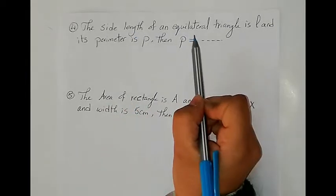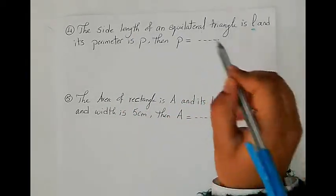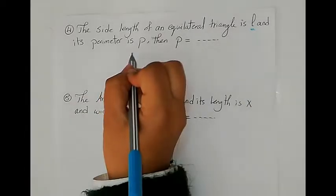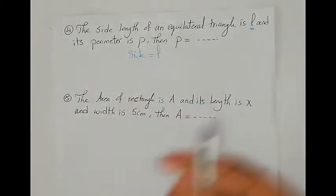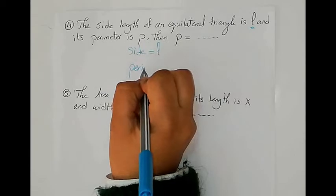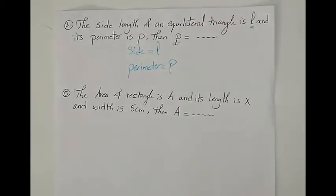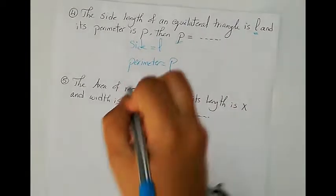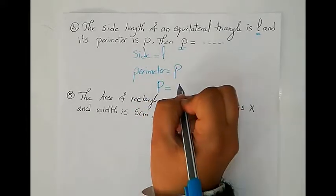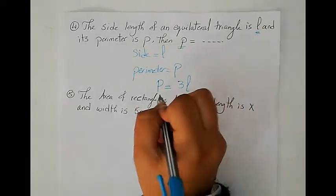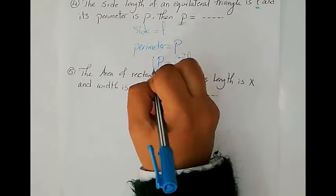Next question: the side length of an equilateral triangle is L, and its perimeter is B. An equilateral triangle has three equal sides. To get the perimeter, we add the three side lengths, or equivalently, perimeter equals side length multiplied by 3. So B equals 3L. Here we have two variables — perimeter B and side length L — and one constant, which is 3.